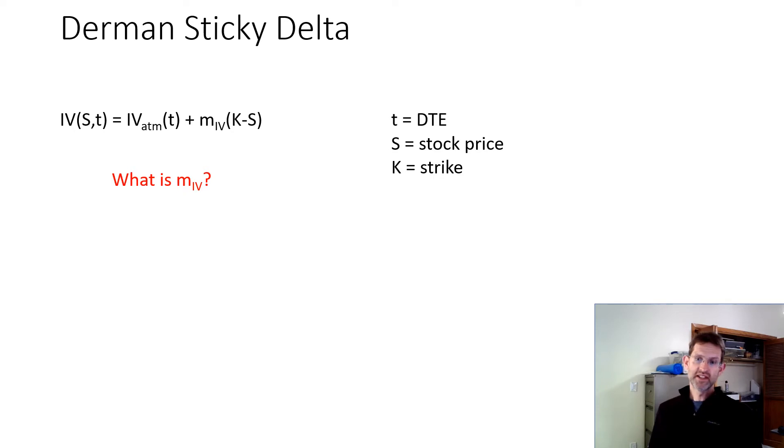So basically it's at-the-money IV plus a slope m_IV times strike K minus the stock price S. So everything except K depends on time. In this case, time is actually days to expiration.